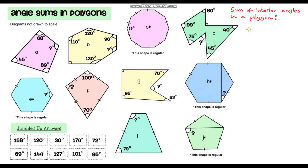What we do is we take the number of sides of the polygon and we take away 2, then we multiply all of that by 180 and that will give us the sum of the interior angles of that polygon. If you're a bit unsure of where this formula comes from or it's completely new to you, I encourage you to go back and watch my previous video on this topic.